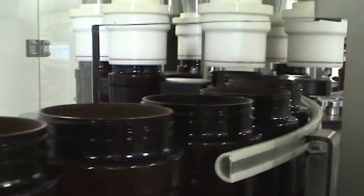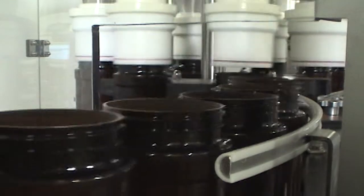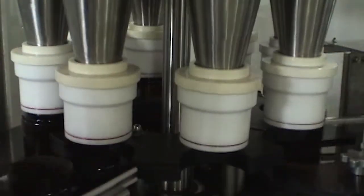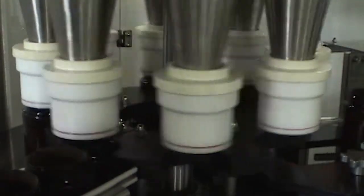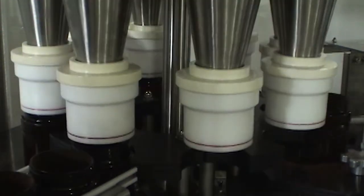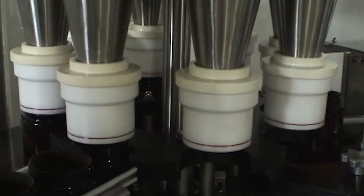The I-Series offers the option of Nalbach's active weight control system, which interfaces with a checkweigher to make on-the-fly adjustments to compensate for variations in product density, ensuring accurate fills and minimizing product giveaway.